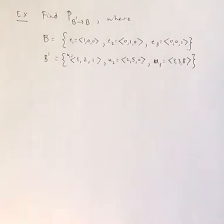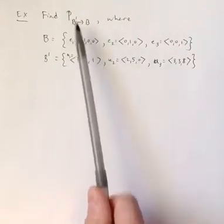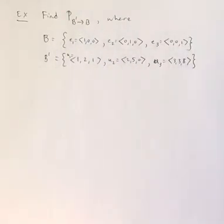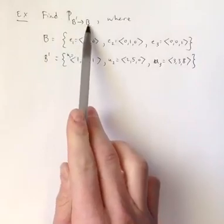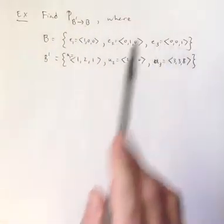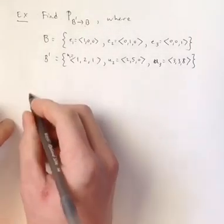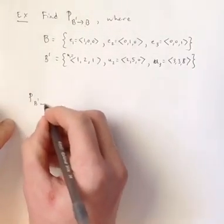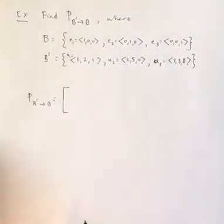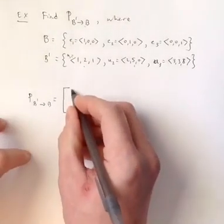So I want to find a transition matrix from this basis into that basis. We've already remarked, since we're changing this into the standard basis E1, E2, E3, then the transition matrix should just have as its columns these vectors, these basis vectors.